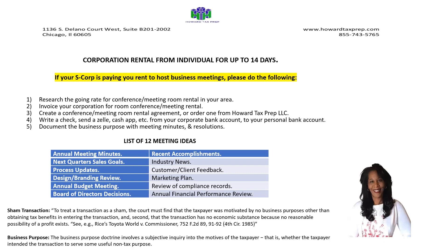Your third meeting could be process updates. This could be as simple as how you're going to receive orders. Some people receive orders through text messaging on their phone, some people email, and then some people stop text messaging and say everybody needs to send an email and upload documents to your portal. Updating processes and your systems is always a good meeting to have for your business.